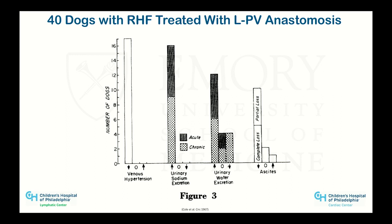In animals with ascites and right heart failure, draining the lymphatic system makes the ascites go away. This was internally draining them — taking fluid from the thoracic duct and connecting it to a low-pressure circuit to allow drainage. Edema and ascites resolved. We have started doing this now in people. The field stopped because we had no way to look at or do anything with the system, but that has changed.